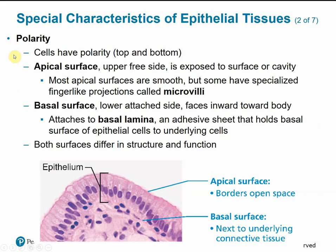Polarity means cells have a top and a bottom. The apical surface is the upper, free side exposed to either the surface or an internal body cavity. Most apical surfaces are smooth, but some have specialized finger-like projections called microvilli, which increase surface area — for instance in the small intestine for maximum absorption. The basal surface is the lower, attached side facing inward toward the body, connected to the underlying connective tissue and attached to the basal lamina. Both surfaces differ in structure and function.